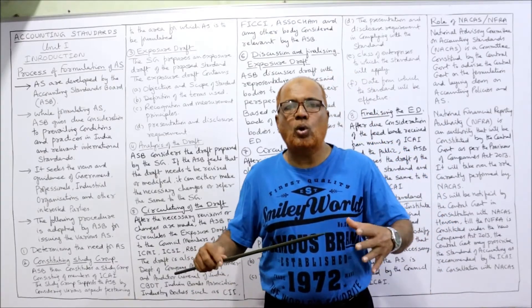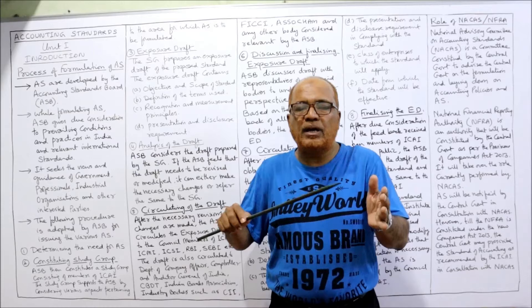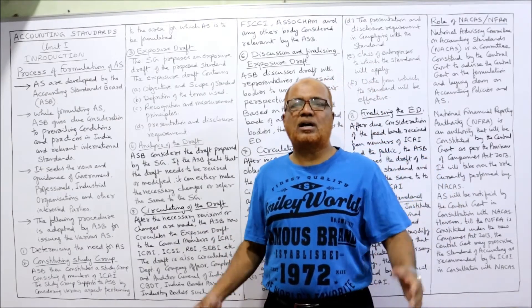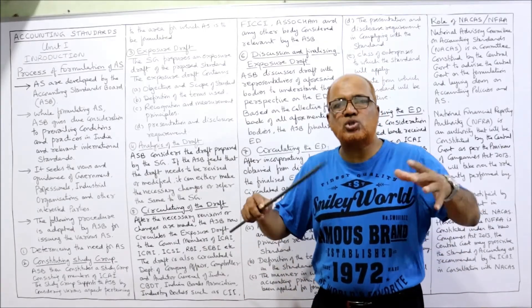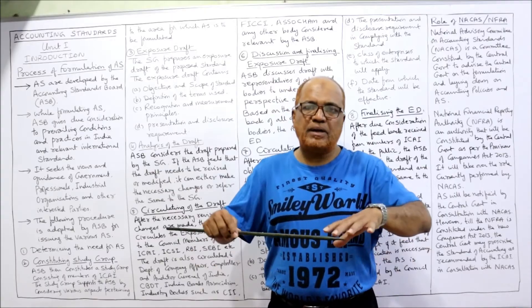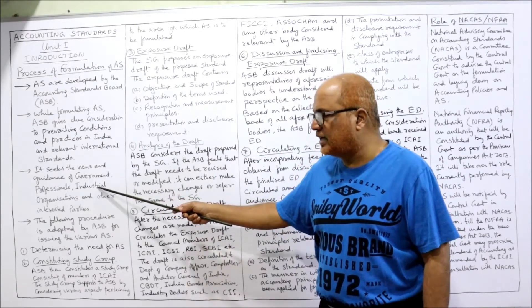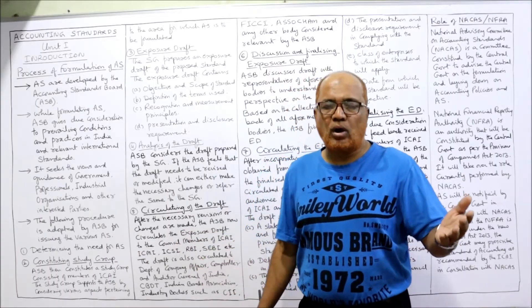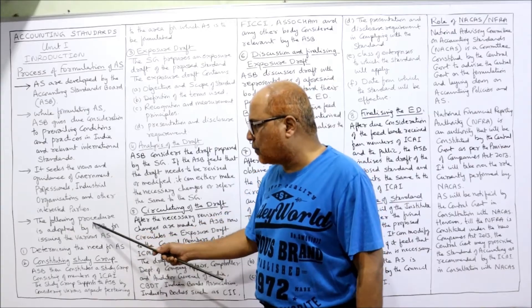Secondly, in formulating accounting standards, ASB gives due consideration to prevailing conditions and practices in India and relevant international standards, because due to globalization all world economies are integrated. Indian accounting standards should be in conformity with international standards. While making accounting standards, ASB considers what are the conditions and practices prevailing in India and consolidates those with international standards. It also seeks views from government, professional bodies, industrial organizations, and other interested parties.